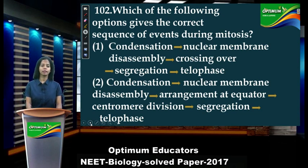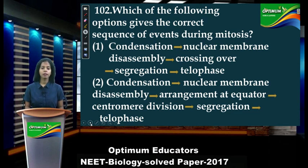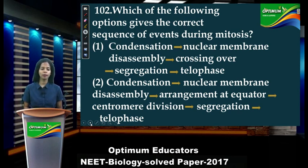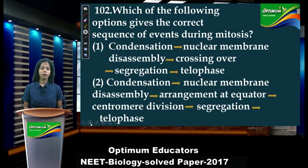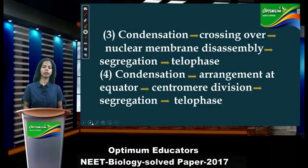Next: 'Which of the following options gives the correct sequence of events during mitosis?' Pay attention — it's mitosis, not meiosis. Option 1 includes crossing over, which occurs in meiosis, so option 1 is wrong. Option 2: condensation in early prophase, nuclear membrane disassembly in late prophase, arrangement at equator in metaphase, centromere division in anaphase, segregation and then telophase — option 2 is correct. Options 3 and 4 either contain crossing over or are not arranged properly.